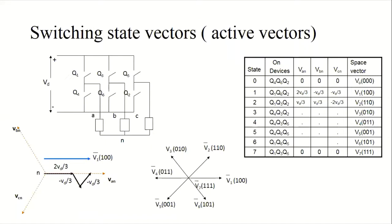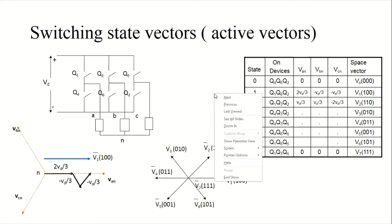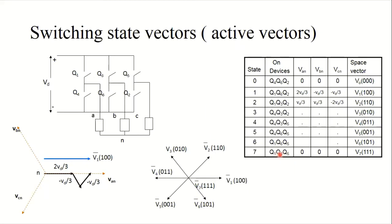You can see on screen the DTC lookup table which has three entries: one is flux error, second is torque error or status signal, and then you have sector 1 to sector 6. On the right side you can see V1 to V6, which are the voltage state vectors. This is a 2-level inverter and switches Q1 to Q6 are to be controlled in the DTC method using this lookup table, so that it generates the required voltage space vector at the required frequency.